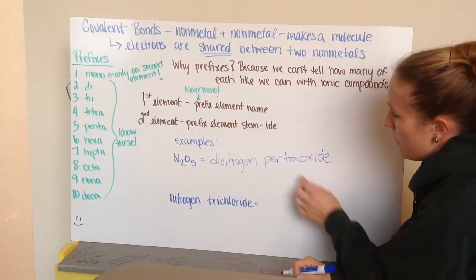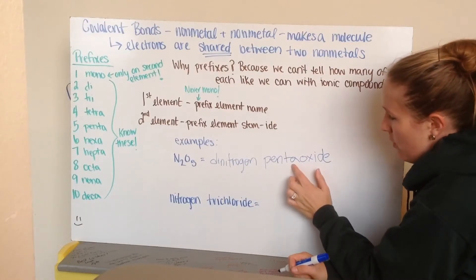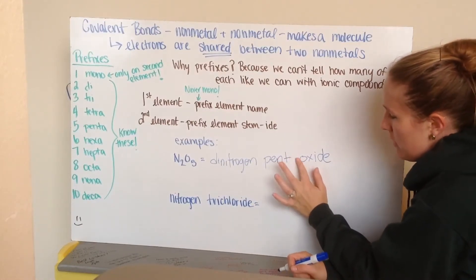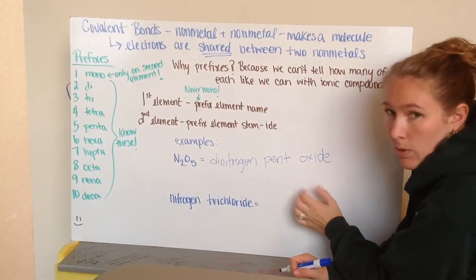Now, one thing to know is we don't write penta oxide. With these two vowels here, we don't put an A before an O. So, we're going to get rid of that A, and we're just going to have pentoxide. Other ones, we will keep that A in there.